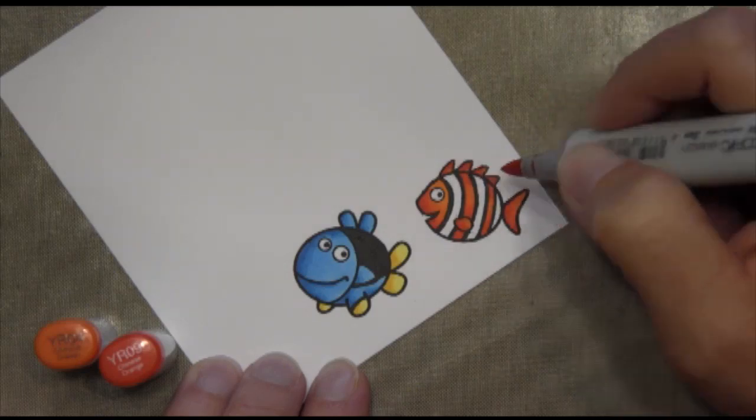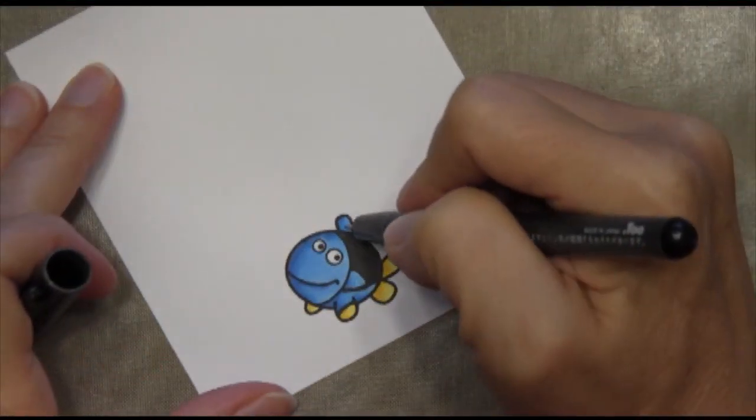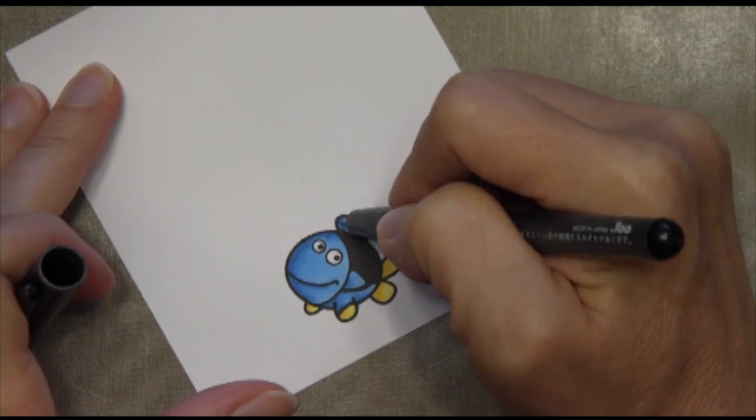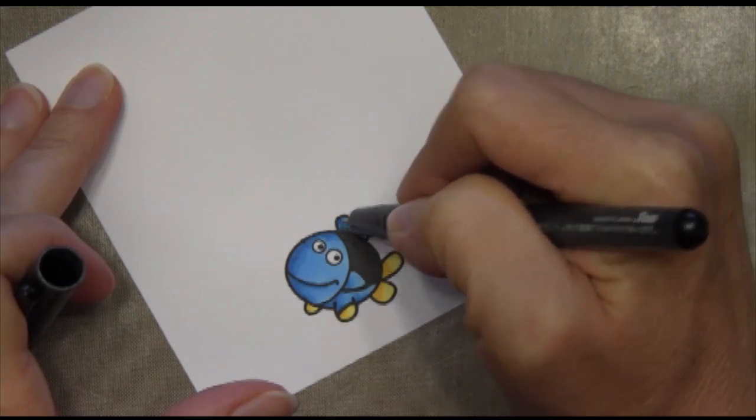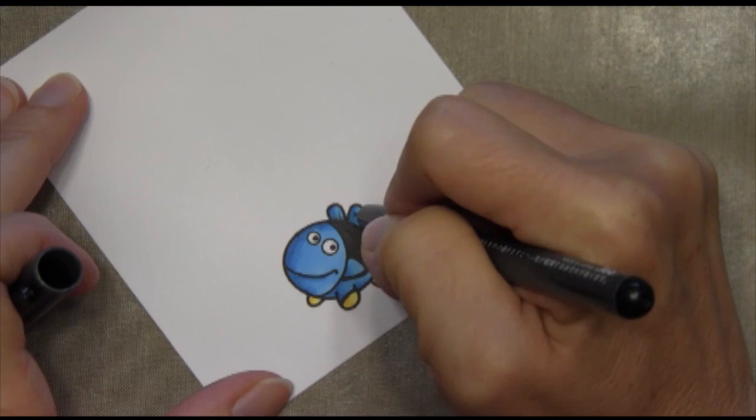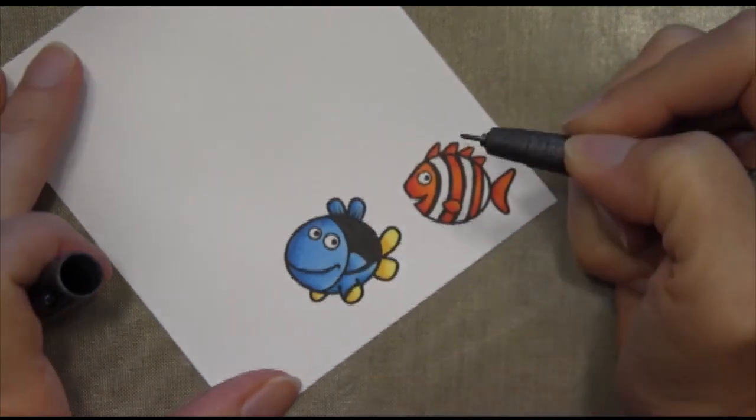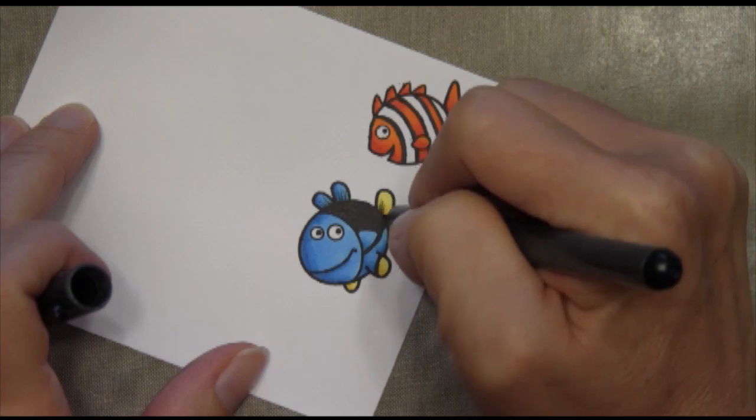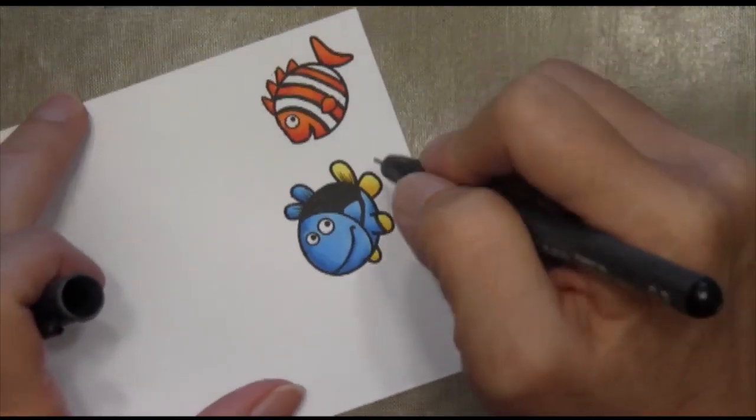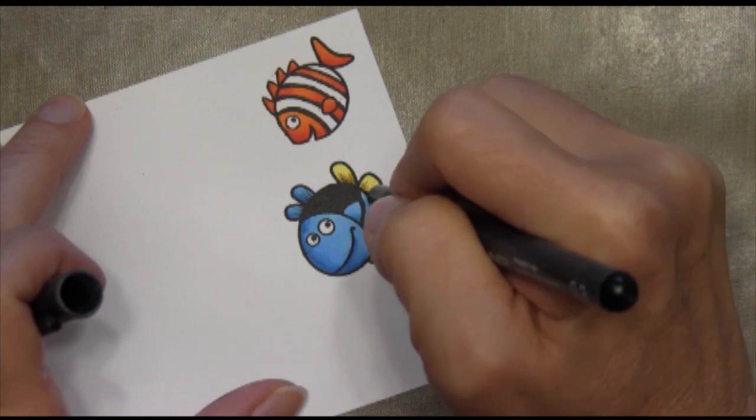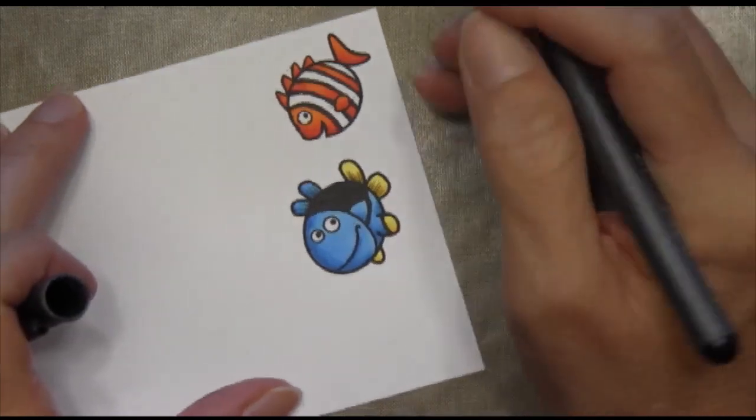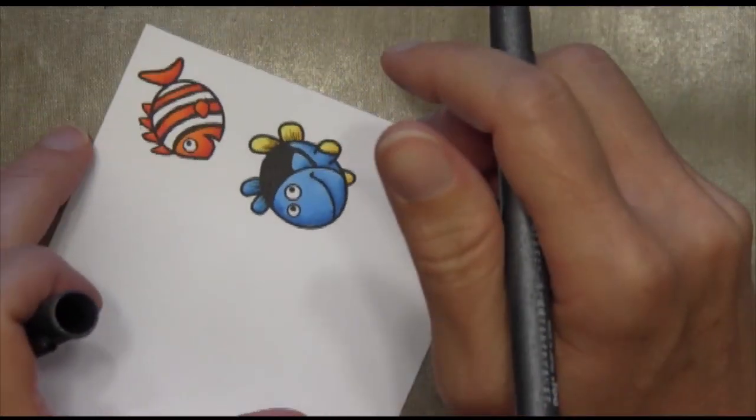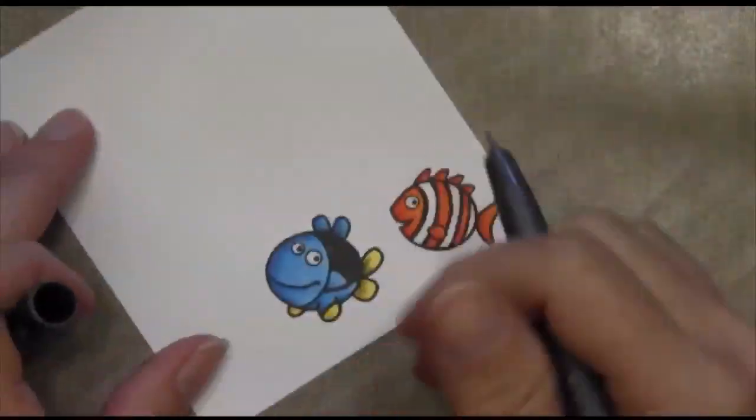Just really lightly with the two colors now to make this look a little bit more realistic. I took my multiliner. It's the same 0.3 and I just kind of gently added some black lines and it really made the fins look like fins. So I'm just lightly kind of flicking my pen upward.